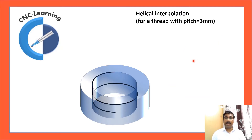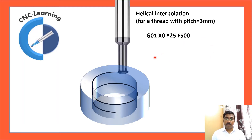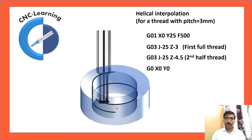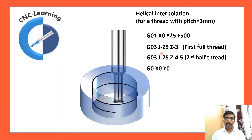Helical interpolation is used to make a thread. In this example, we are making a left-hand thread with 3 mm pitch. The tool is first positioned to X0, Y25. Then G03, J-minus 25 — it makes a circle along with Z-axis movement, forming a helix. The first pass makes a full thread: G03, J-minus 25, Z-minus 3. The next pass makes only a half thread, so the Z movement is half the pitch.